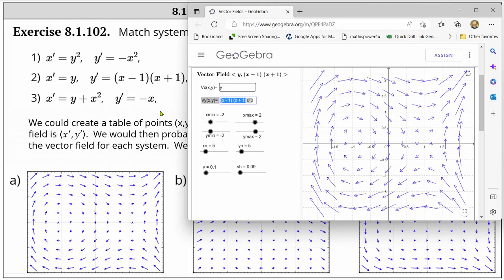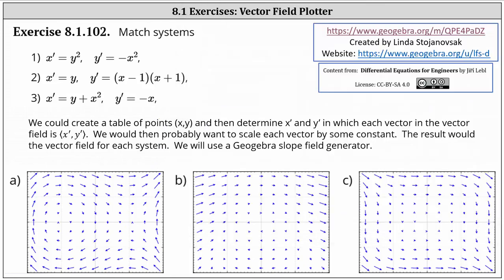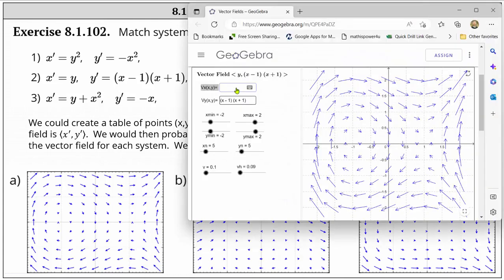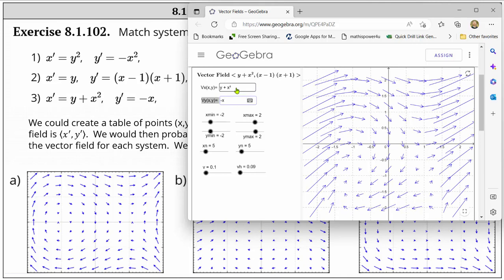And of course, the third system will match with the vector field b, but let's go ahead and graph it. And we have x prime equals y plus x squared, tab, y prime equals negative x, enter.